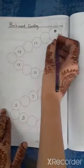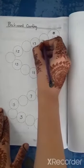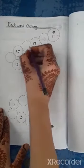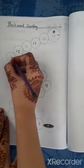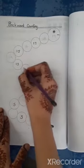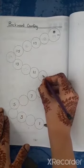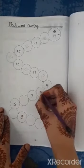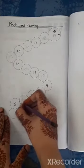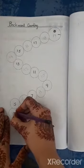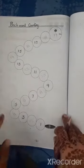Start from 19, 18, 17, 16, 15, 14, 13, 12, 11, 10, 9, 8, 7, 6, 5, 4, 3, 2, 1. Well done.